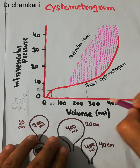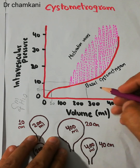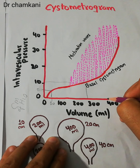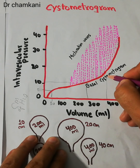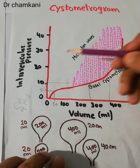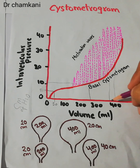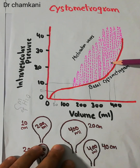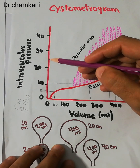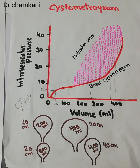Any increase above this level — even a slight increase — will increase the pressure tremendously. At around a urinary volume of 400 ml, the pressure has increased tremendously and it increases more and more.